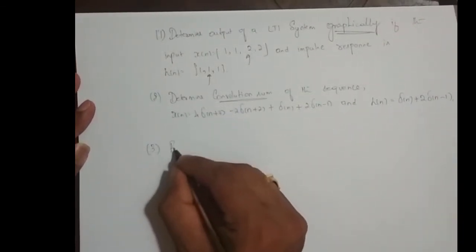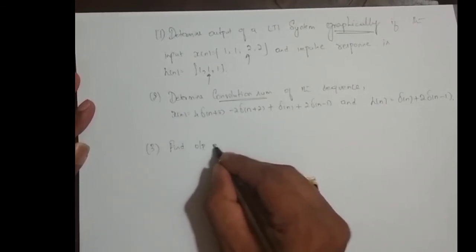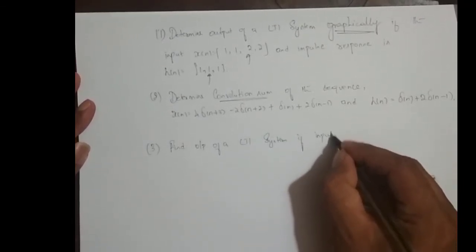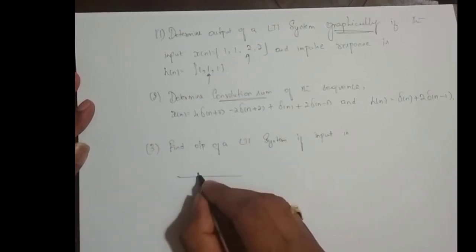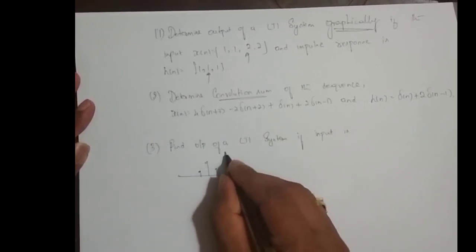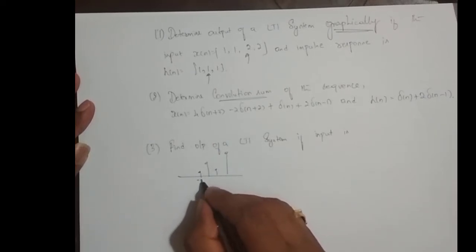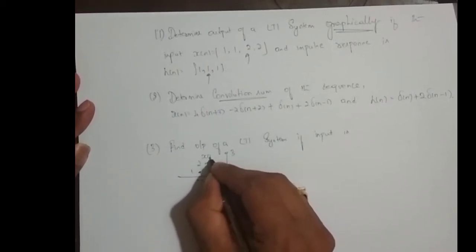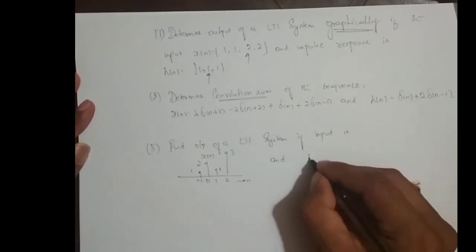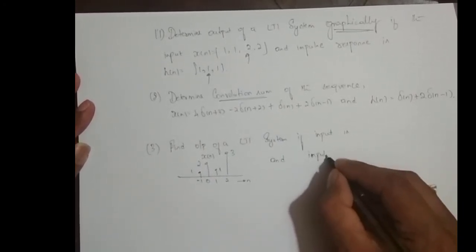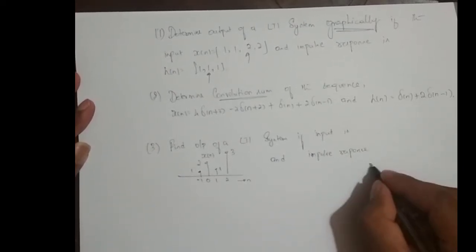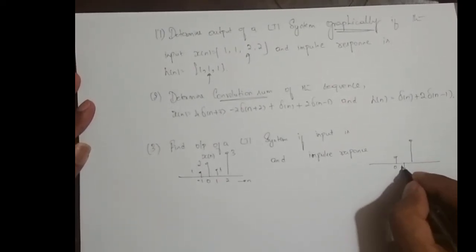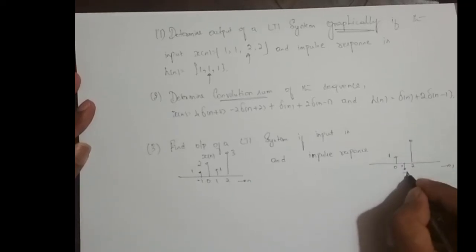Third one, find output of an LTI system. If input is, say this is minus 1, 0, 1, 2, 1, 2, 1, 3. This is input and impulse response is 0, 1, 2, this is 1, this is minus 1 and this is 2.